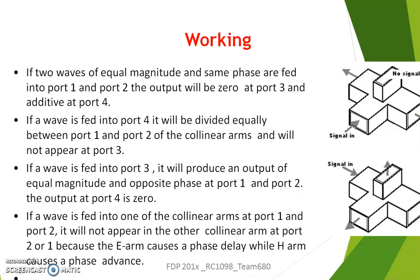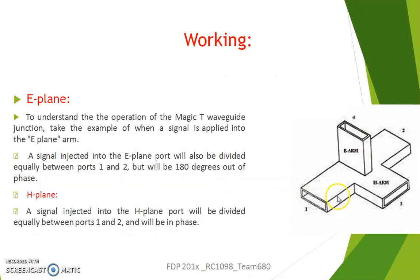If an input signal is applied at port 1, there will be no output at port 2, and vice versa. If a wave is fed into one of the collinear arms — either port 1 or port 2 — it will not appear in the other collinear arm, because the E-arm causes a phase delay and the H-arm causes a phase advance. To understand the Magic T better: when a signal is applied to the E-plane arm, it is divided between port 1 and port 2 but 180 degrees out of phase. A signal injected into the H-plane port is divided equally between port 1 and port 2 but in phase.